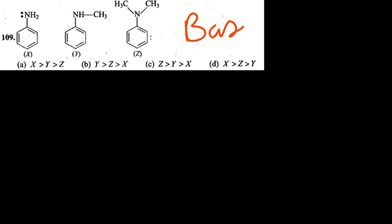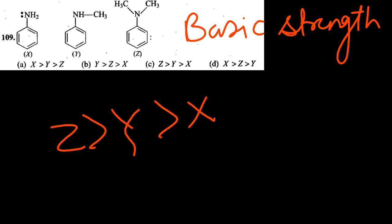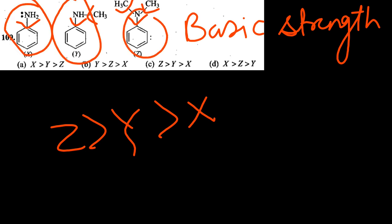Next question: find the basic strength order. The most basic will be Z, then Y, then X. Here there are two plus I groups; in Y one plus I is there and one withdrawing; in X there is a withdrawing group. So the order is Z > Y > X, and option is C.